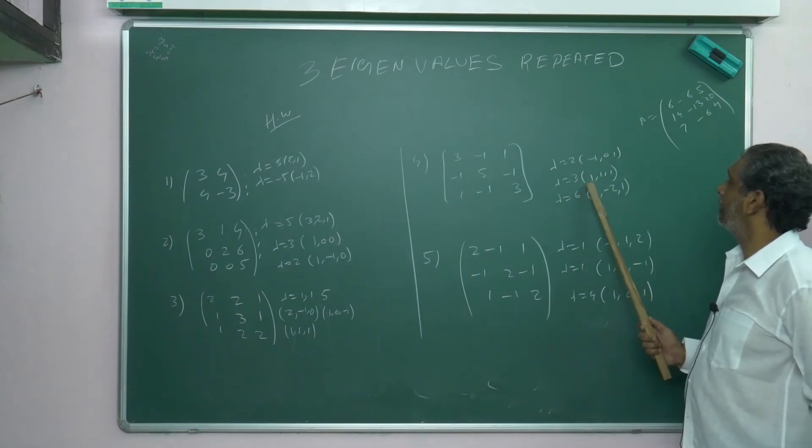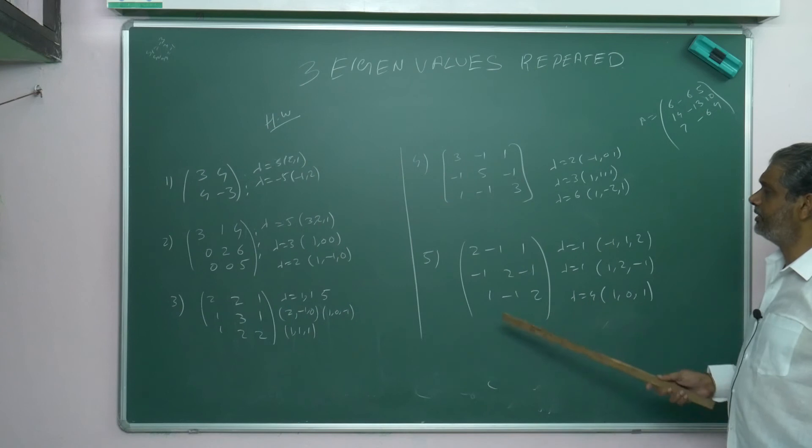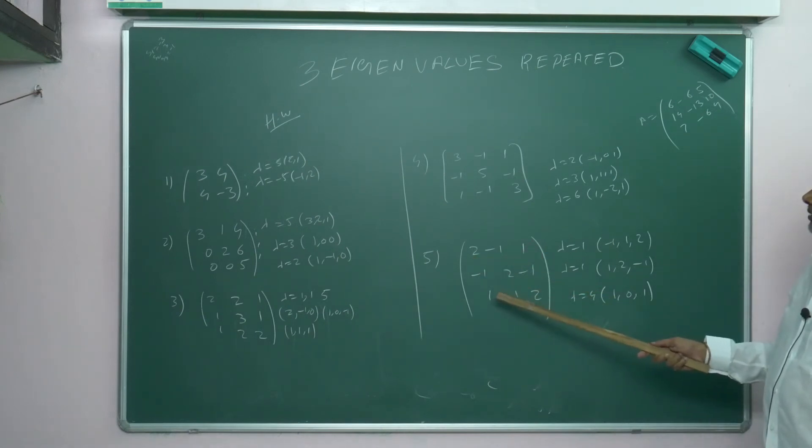Fifth question: 2, -1, 1, -1, 2, 1, -2, 1, -2, 1, -1, 1. Lambda equals—this is repeated roots. One, one means (-1, 1, 2), (1, 2, -1). Lambda equals 4: (1, 0, 1).